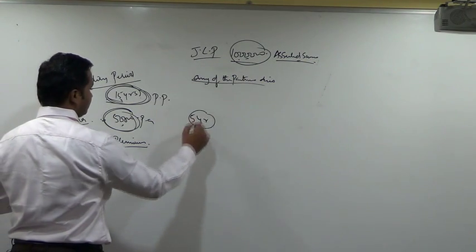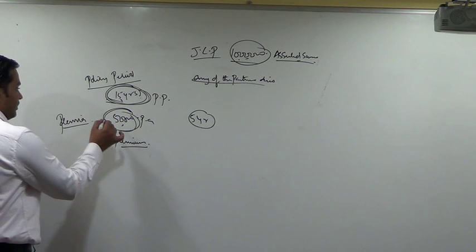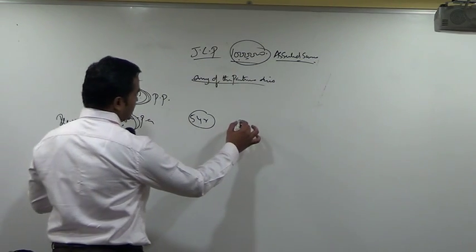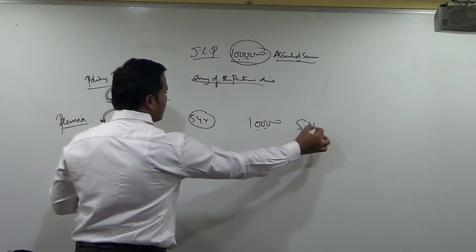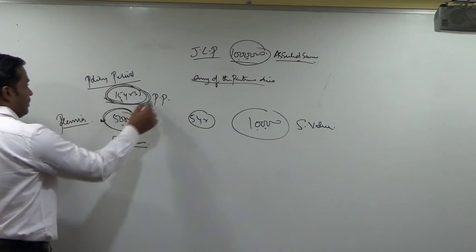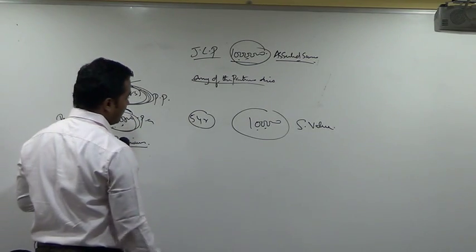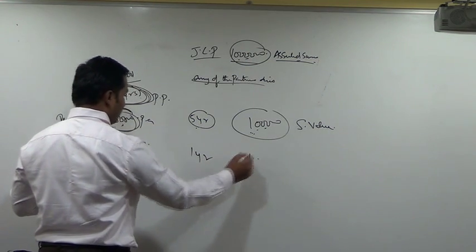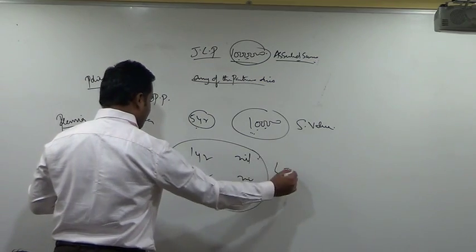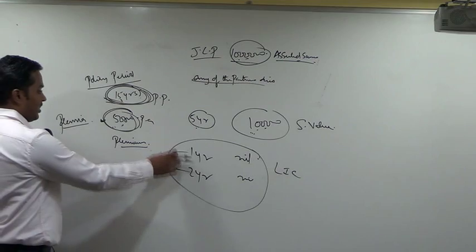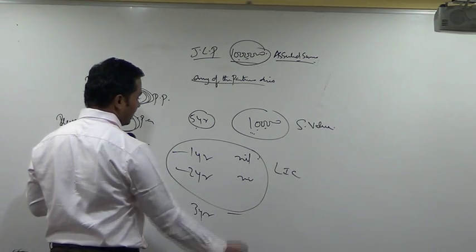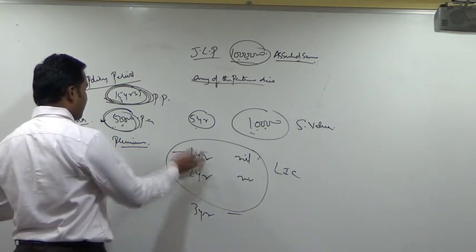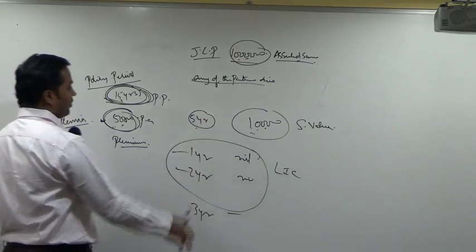Suppose after paying 5 years' premium, you want to discontinue the policy — the firm is not in a position to pay this 50,000 every year. After paying for 5 years, they want to cancel the policy. Then the insurance company may say they will give you 1 lakh — this is called the surrender value. If you cancel in the first year, surrender value will be nil. LIC doesn't pay any surrender value if the policies are surrendered in the first 2 years. From the third year onwards, you will start getting some surrender value. As the policy becomes older, the surrender value will also keep increasing. The earlier the cancellation, the lower the amount you will get; the later the cancellation, the more surrender value you are going to get.